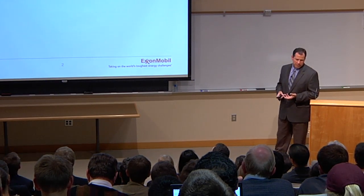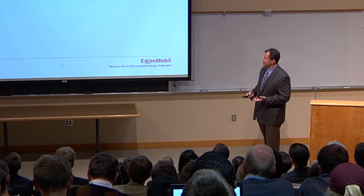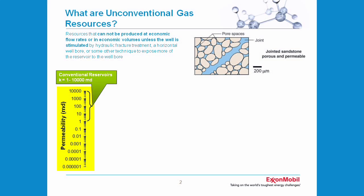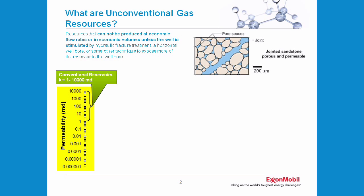So what do those rocks look like? If you look at conventional — if you have unconventional, you must have conventional. What I'm showing here is a scale of permeability, which is the measure of how the fluids contained in the rock will flow out of them, and you can see it's a logarithmic scale. Conventional reservoirs of 1 to 1,000 millidarcies or 10 darcies of flow — you can see 200 microns. This is a sandstone with conventional pore space, and this is where conventional hydrocarbons are produced from.